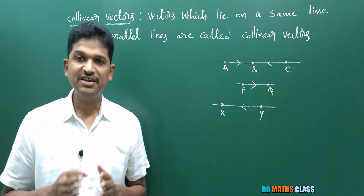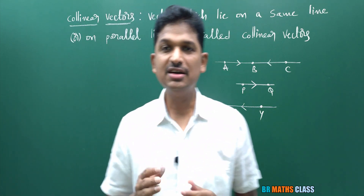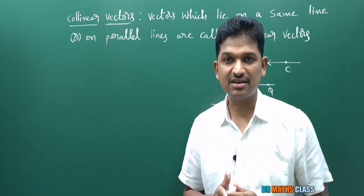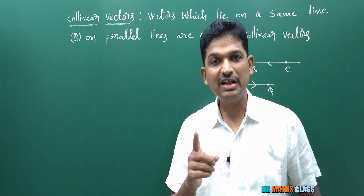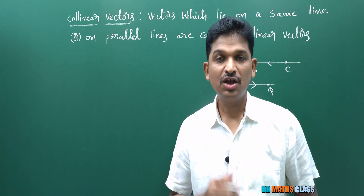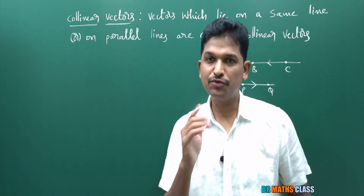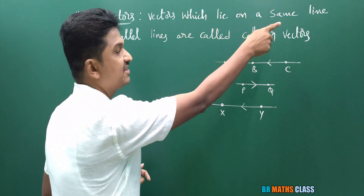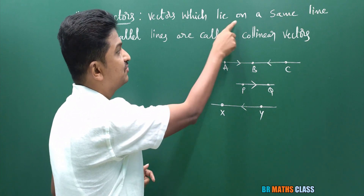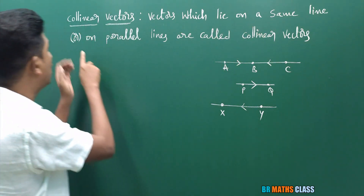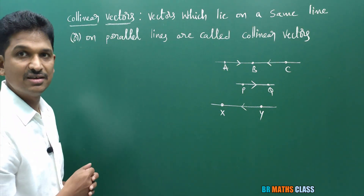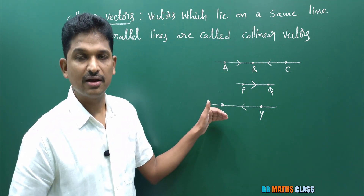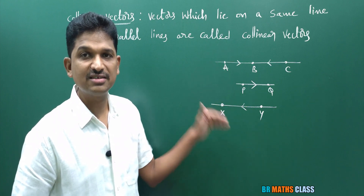First definition is collinear vectors. An important point is collinear vectors are also known as parallel vectors. The definition of collinear vectors: vectors which lie on a same line or on parallel lines are called collinear vectors. You observe here, three parallel lines are there, and on these parallel lines there are some vectors.